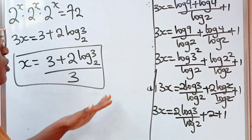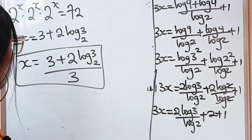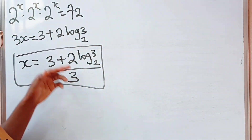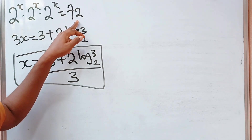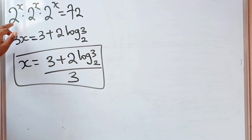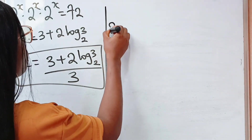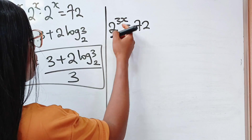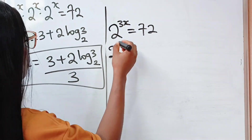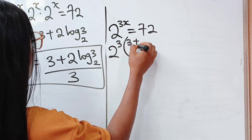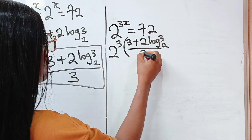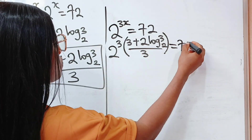Now, to the most interesting aspect of this video — let's prove that the answer we got is right. The equation says 2 to the power of x into 3 places is equal to 72, which is the same as 2 to the power of 3x. So we substitute our x: it's going to be 2 to the power of 3 times the bracket 3 plus 2 log 3 base 2, everything divided by 3, is equal to 72.